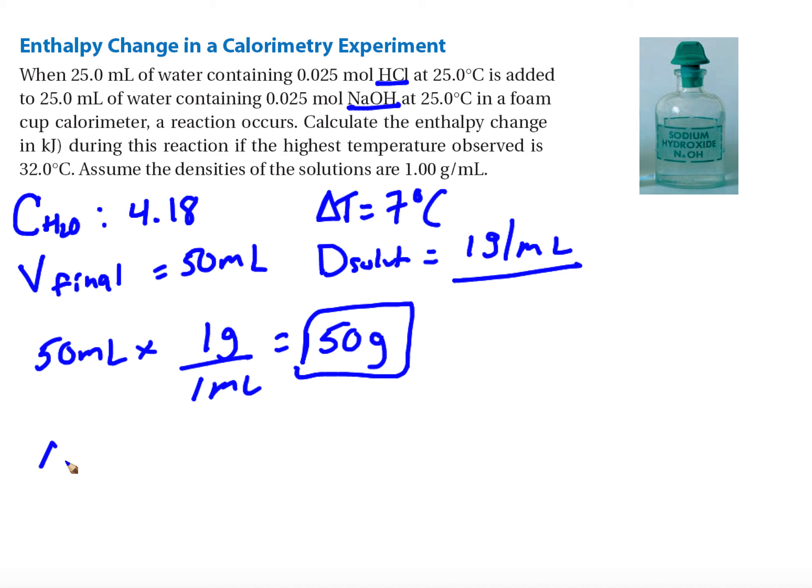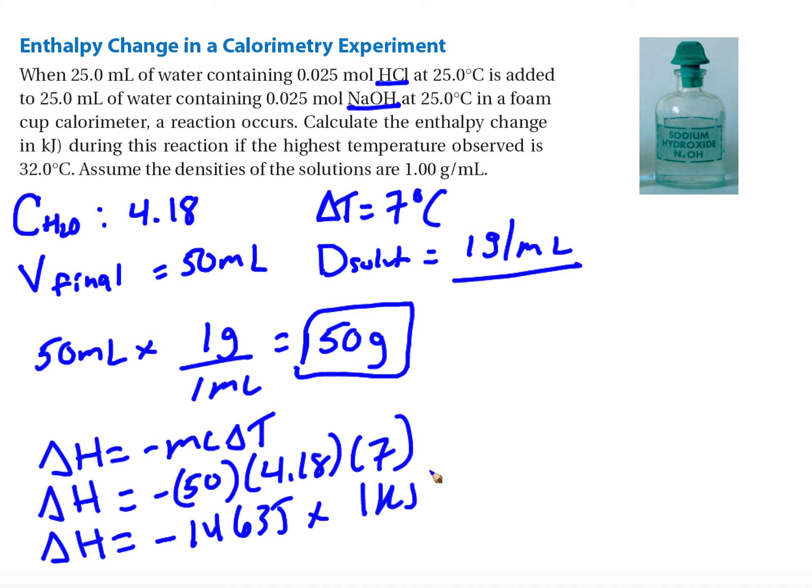My formula: delta H is equal to negative mc delta t. Delta H equals negative 50 times 4.18 times 7. I'm going to get negative 1463 joules. I want to change those to kilojoules, and I'll get negative 1.46 kilojoules.